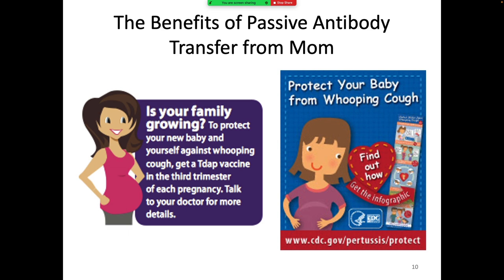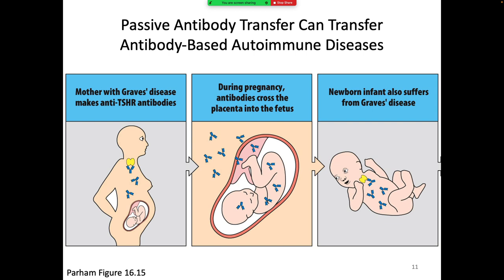One downside of antibody transfer through the placenta is that some autoimmune diseases are mediated by antibodies. For example, in Graves' disease individuals have antibodies that attack their thyroid. If a pregnant woman has Graves' disease, those antibodies can cross into the fetus and act on the baby's thyroid. Because we're transferring the antibodies and not the B cells, this is a short-term thing — when those antibodies have degraded, the baby will be okay.